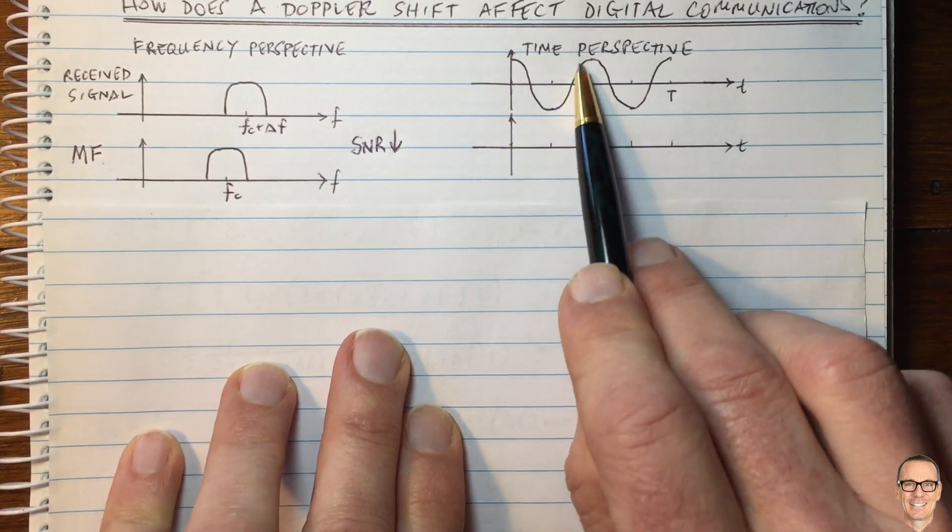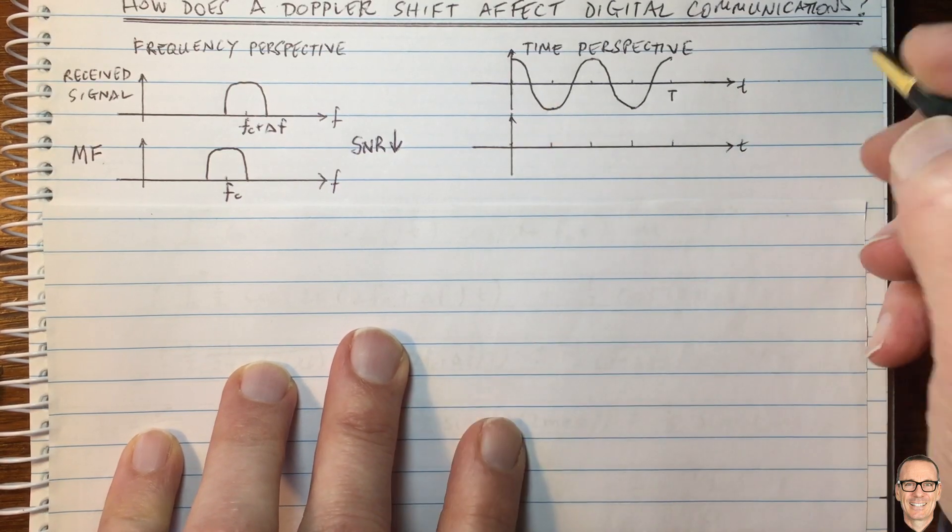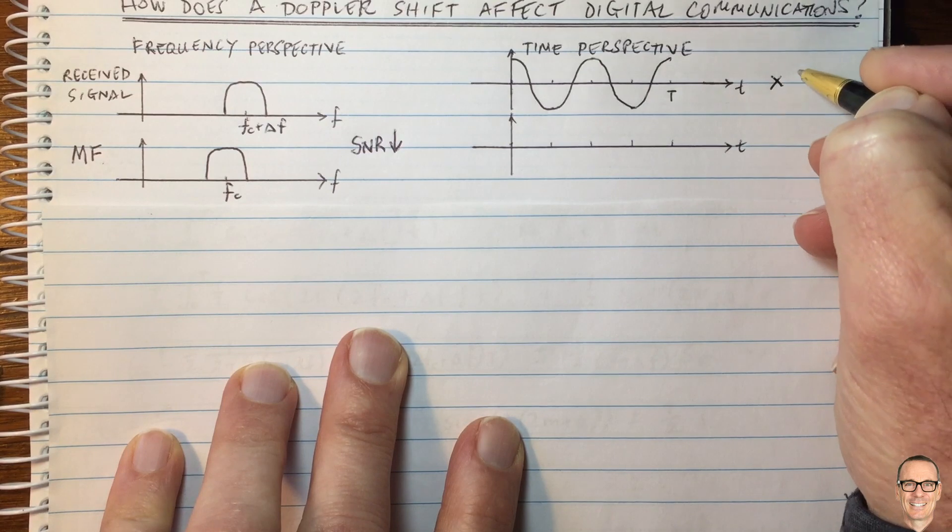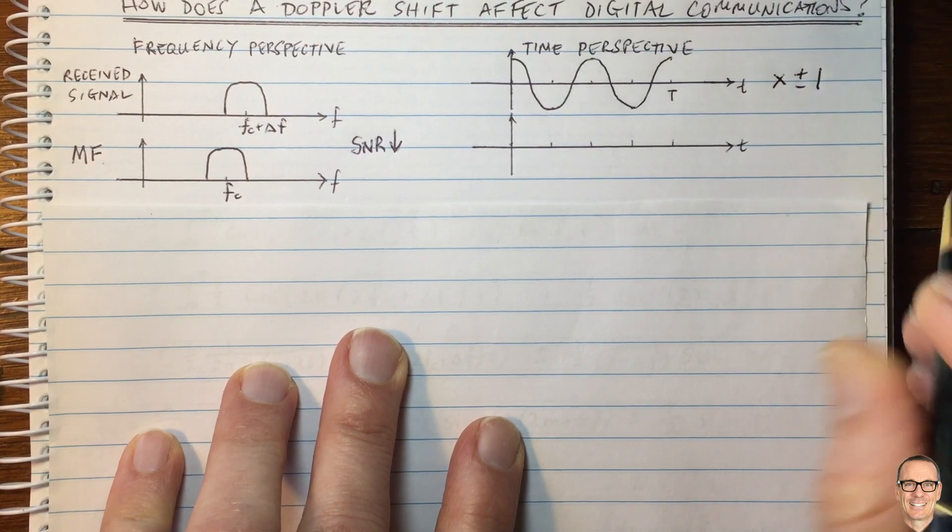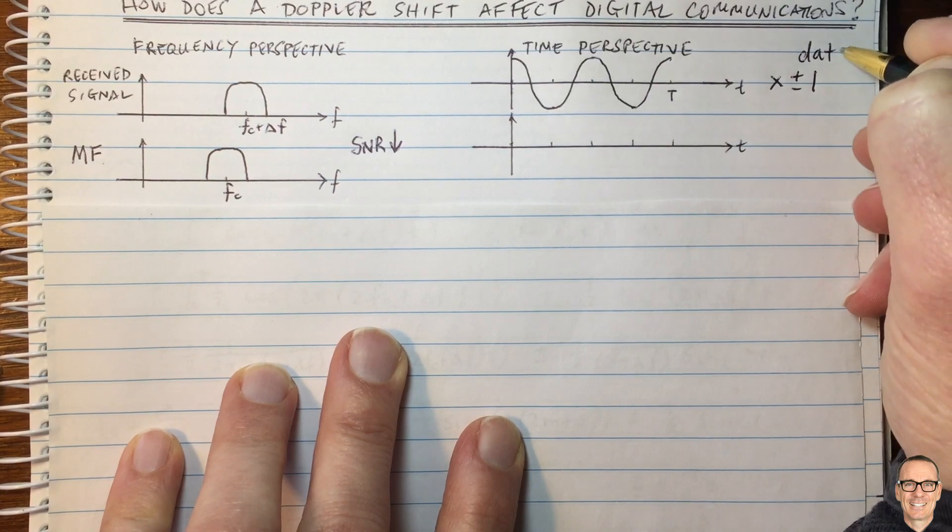Here's an example of the carrier waveform in a BPSK example, where we're either sending plus one or minus one. So this will be multiplied by a plus or minus one, depending on the data. So this is the transmitted signal.